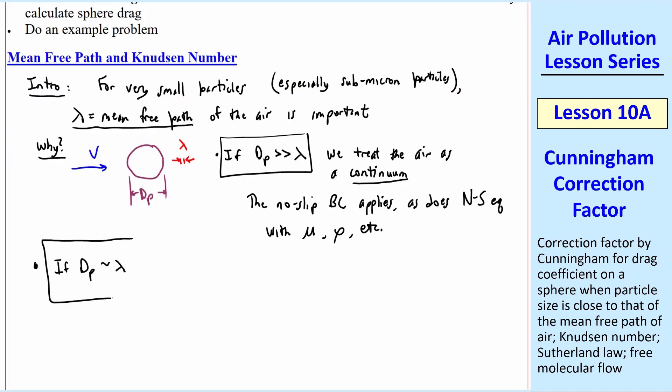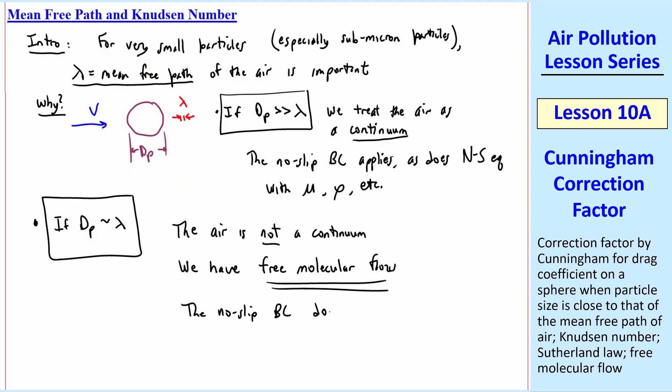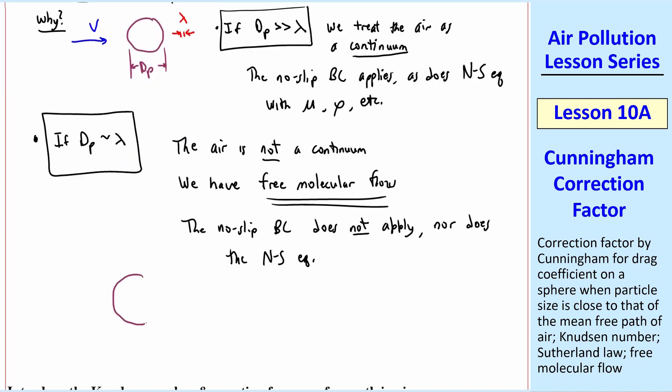But what happens if dp is of the same order of magnitude as lambda? Then the air is not a continuum. Instead, we have what's called free molecular flow, and the no-slip boundary condition does not apply, nor does the Navier-Stokes equation. I'll sketch this case here.